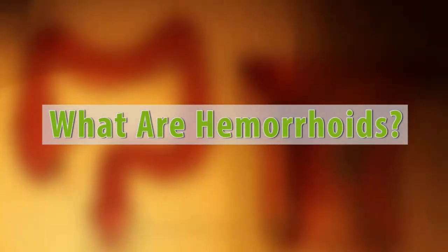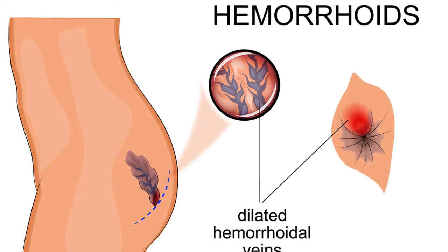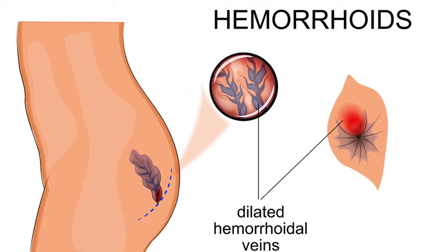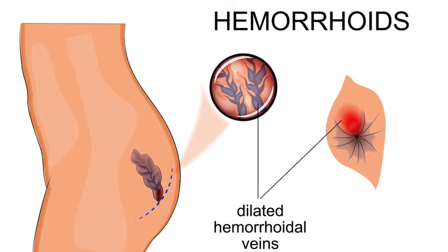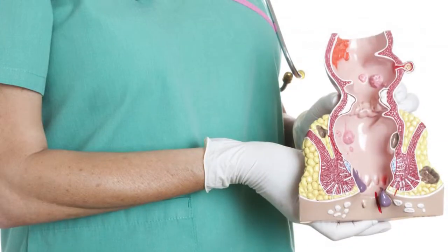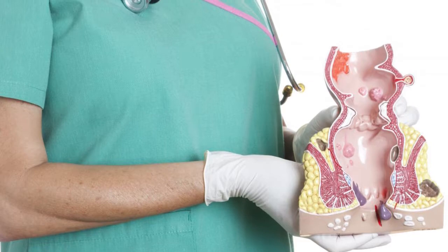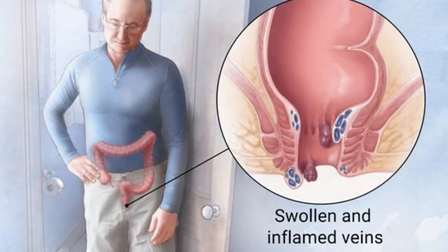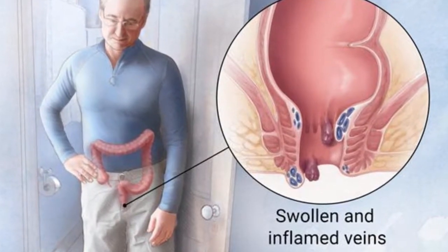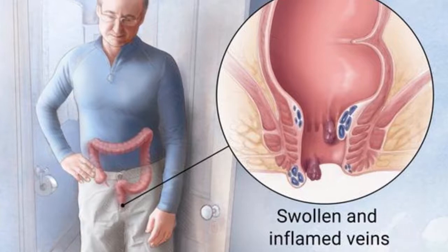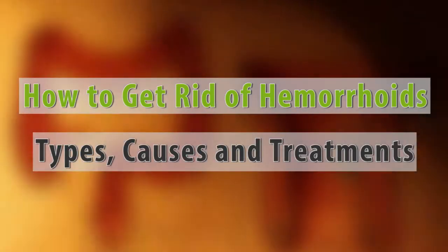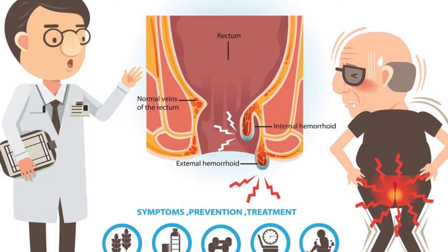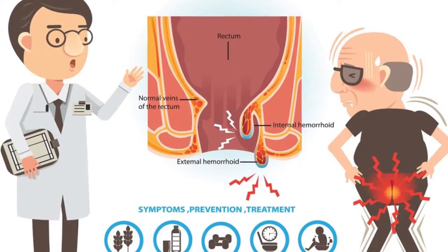What are hemorrhoids? Hemorrhoids are clumps of dilated, enlarged blood vessels in the anus and lower rectum. The rectum is the last area of the large intestine before it exits to the anus. The anus is the end of the digestive tract where feces leaves the body.